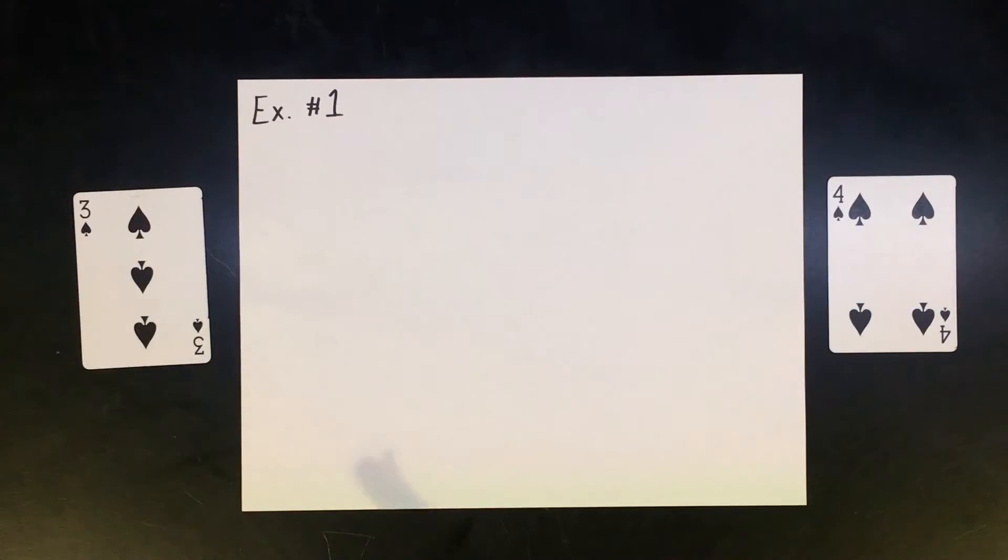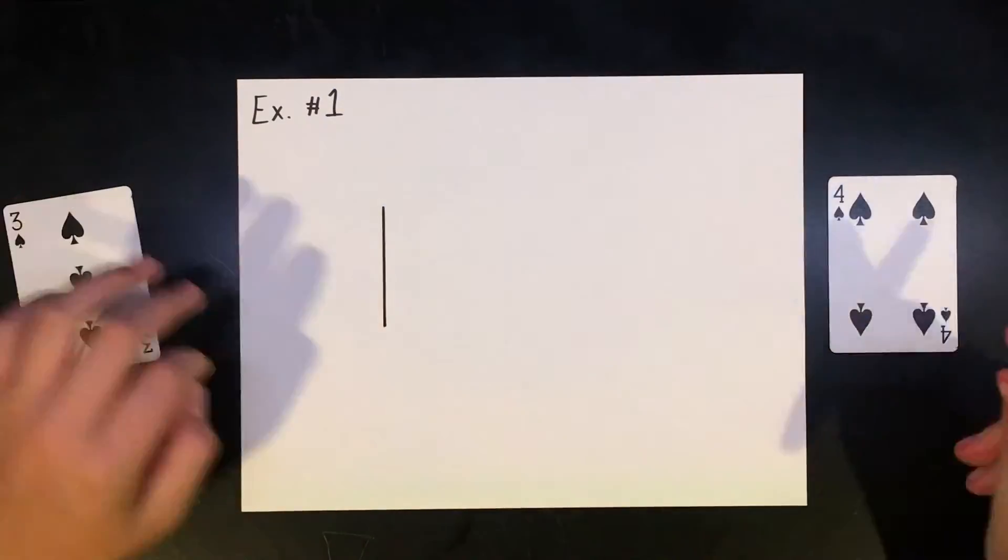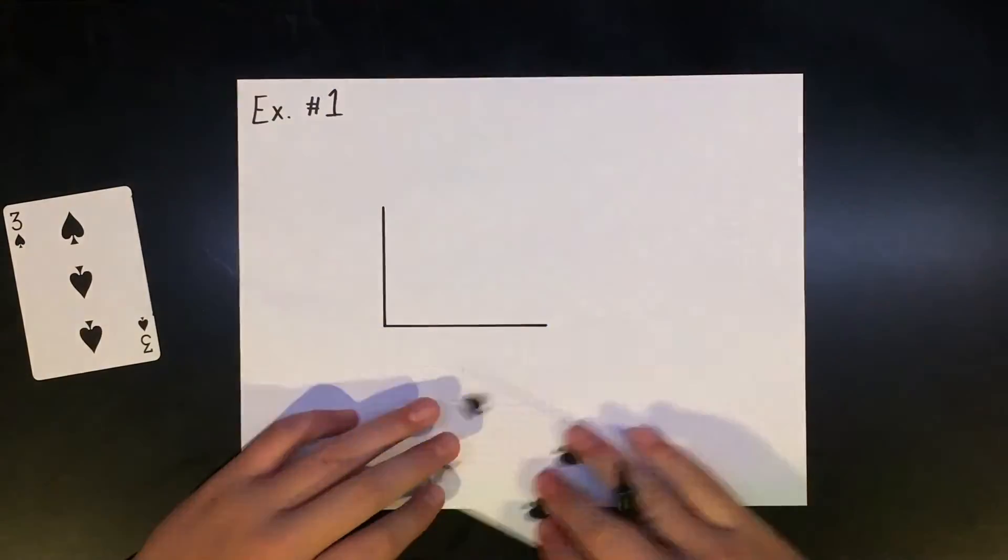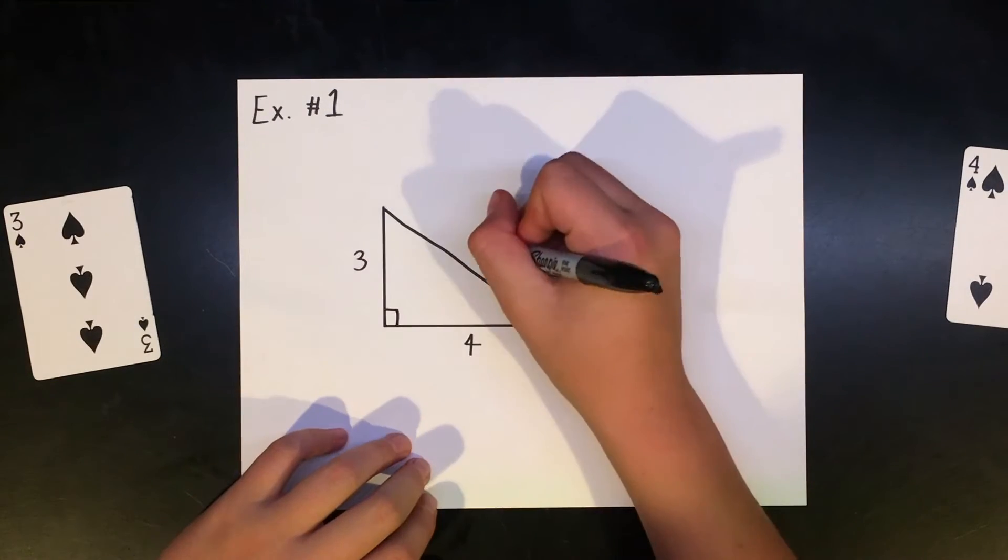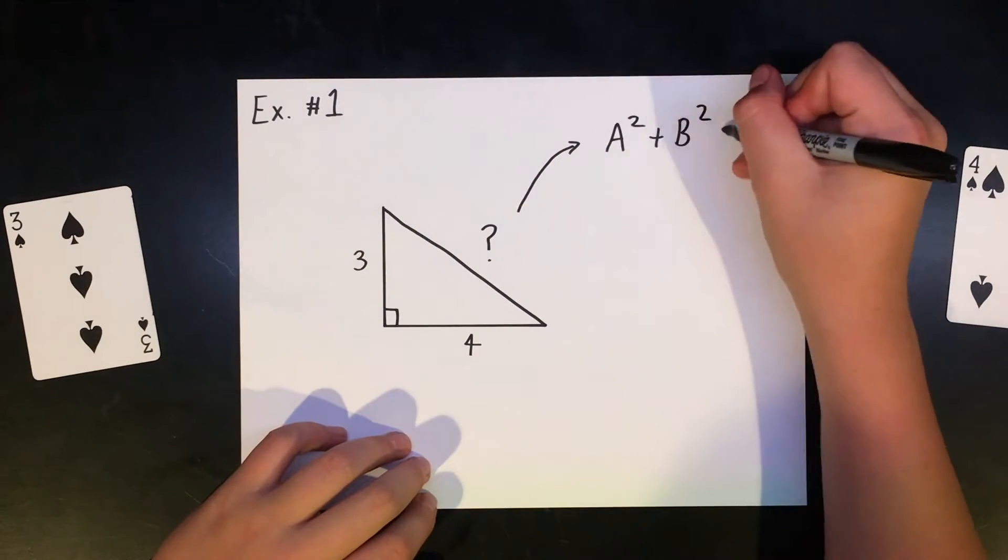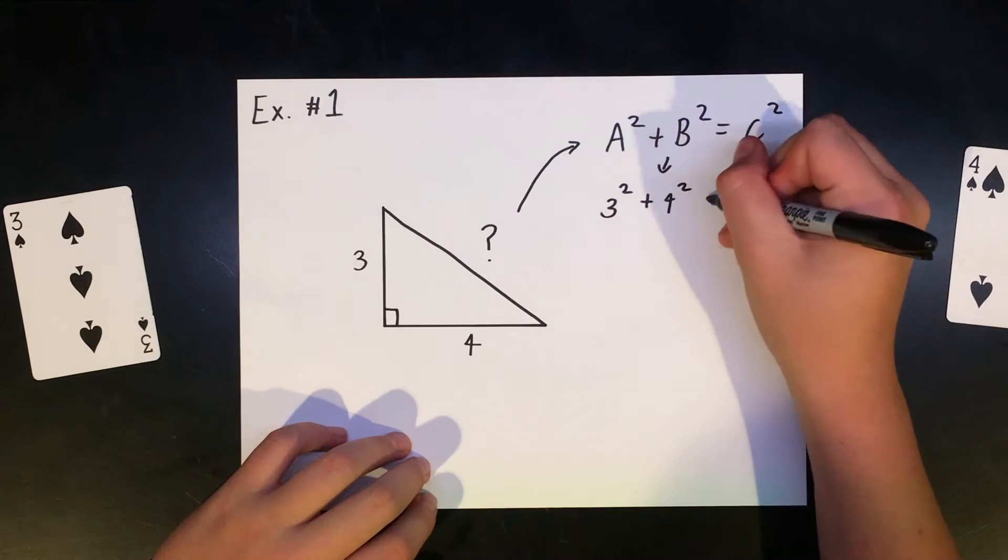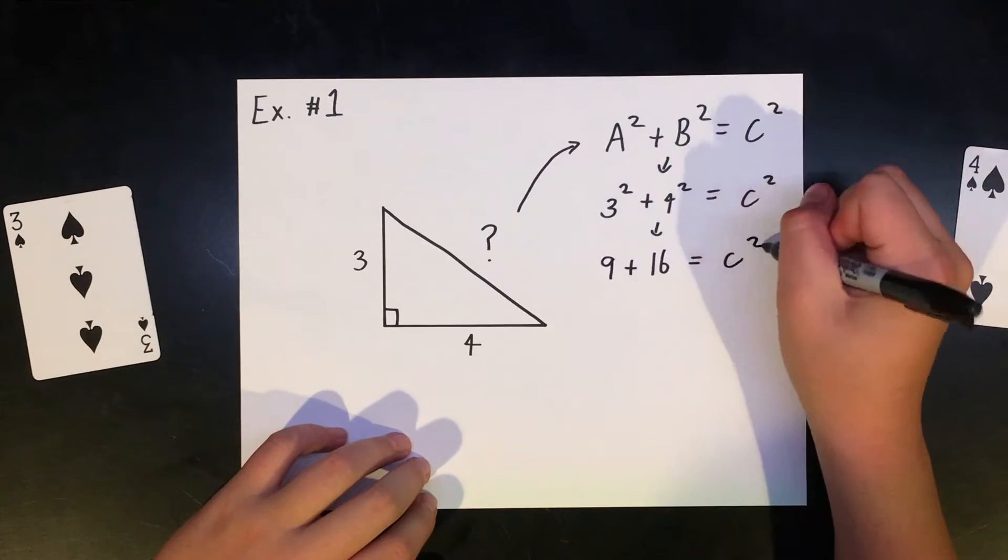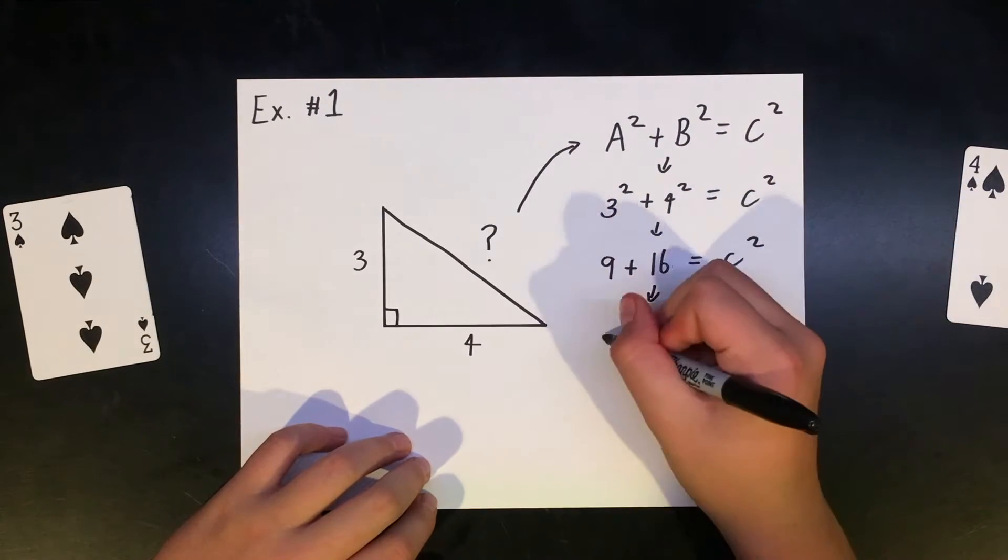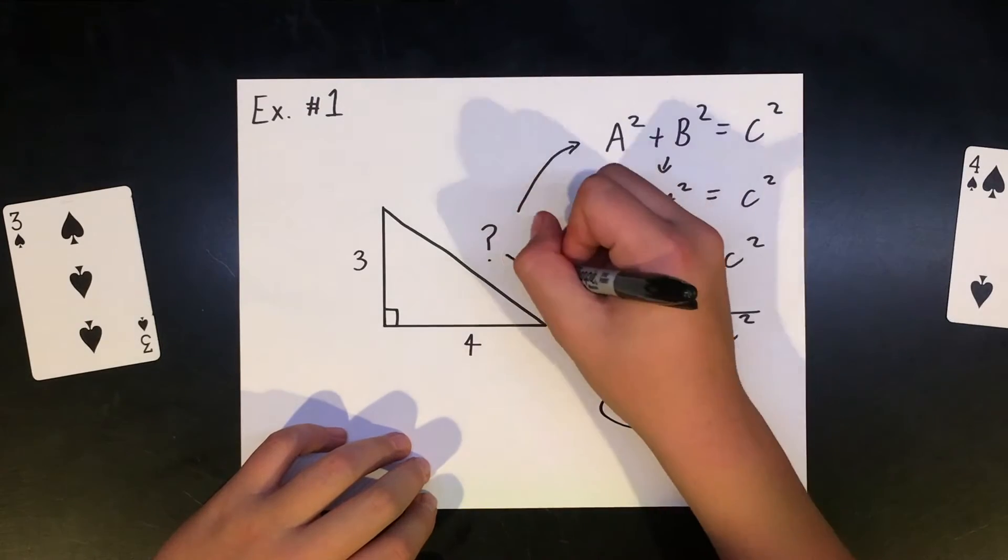A simple example of this is with a right triangle that has one leg length of 3 and one leg length of 4. We would square both of these numbers to get 9 plus 16 equals 25. And since 25 has a whole number for a square root, the hypotenuse is simply 5.